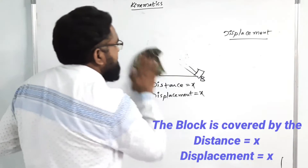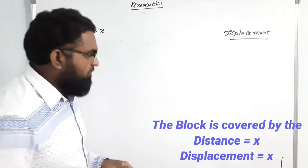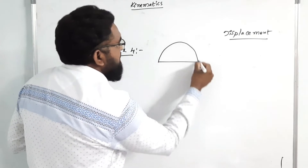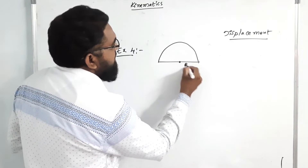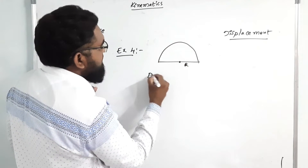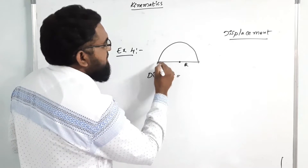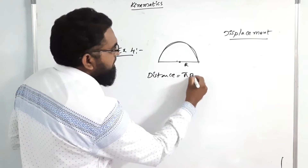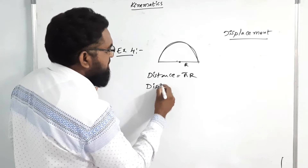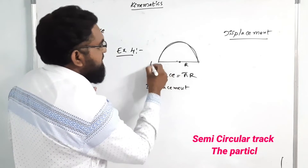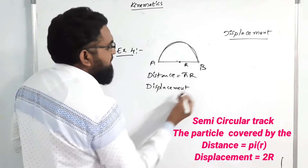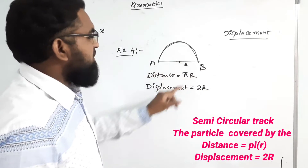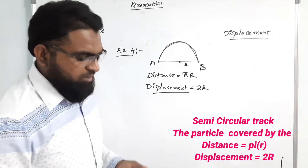Fourth example: suppose this is a semicircular ring with radius R. The distance covered is how much angle — 180 degrees — so distance equals π × R. For displacement, take A to B: this radius is R and this radius is also R, so both sides give 2R. Therefore displacement is 2R.